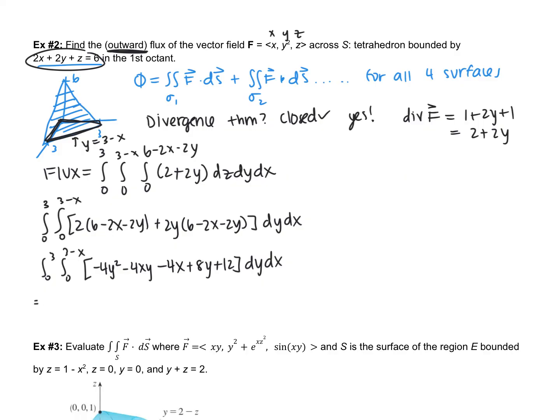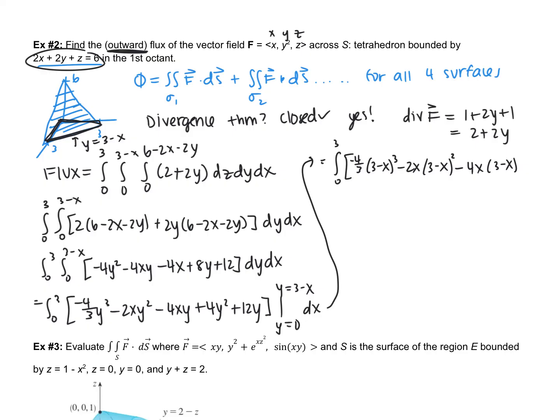So, now if I integrate with respect to y, I'm going to get negative 4 thirds y to the third, subtract 2xy squared, subtract 4xy, add 4y squared, add 12y. Evaluated from y equals 0 to y equals 3 subtract x. Okay. So, that then will give me the integral from 0 to 3 of negative 4 thirds, 3 subtract x to the third, subtract 2x times 3 minus x squared, subtract 4x times 3 minus x, add 4 times 3 minus x squared.